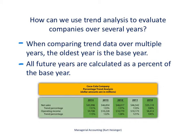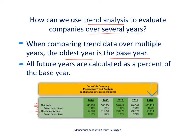Another way to perform trend analysis is to look at information not just from one year to the next, but over several years. Here we have an example of Coca-Cola over the course of five years — five years is fairly common in 10-K reports, and sometimes you'll even see 10-year trends. When looking at trend analysis over several years, we need to show the oldest year as the base year. In this analysis, the base year is 2010, and we're focusing on net sales and operating income.